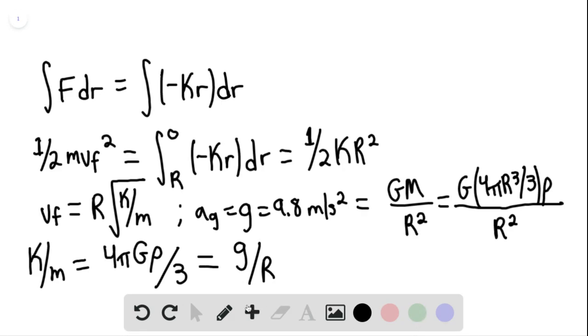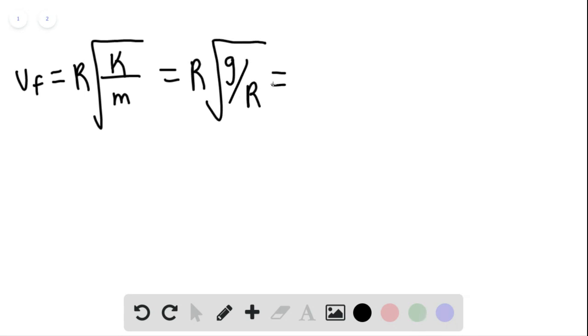So we can then say that the final velocity would be equal to r multiplied by the kinetic energy k divided by m. And once we substitute, this would be r divided by the square root of g over r. And this is simply equal to the square root of g times r.